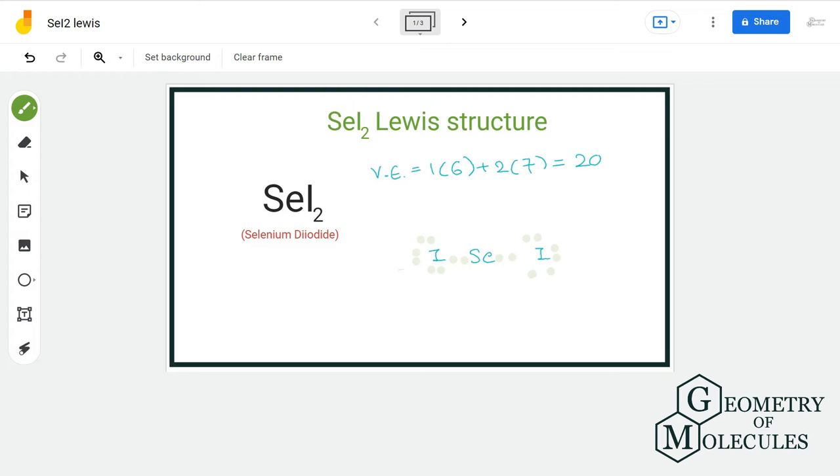We are still left with four more electrons and selenium needs four more electrons for completing its octet. So let us assign the remaining electrons to it.